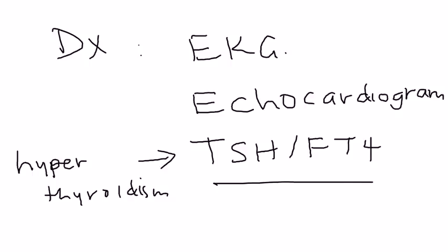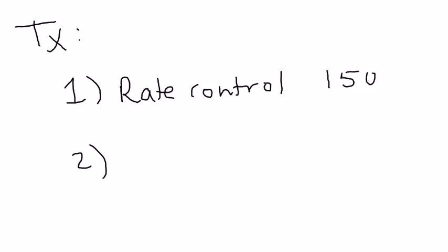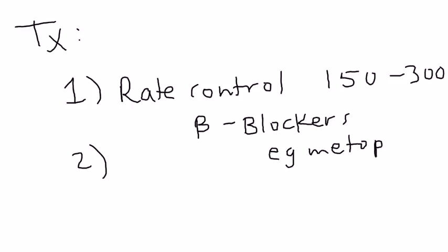How do you treat this? The treatment of atrial fibrillation involves two things. The first is rate control. The heart rate of somebody with atrial fibrillation can be very high - anywhere from 150 to maybe 300 beats a minute. You need to control the rate. The most common medication to use for rate control is beta blockers, for example metoprolol. Metoprolol is very commonly used.